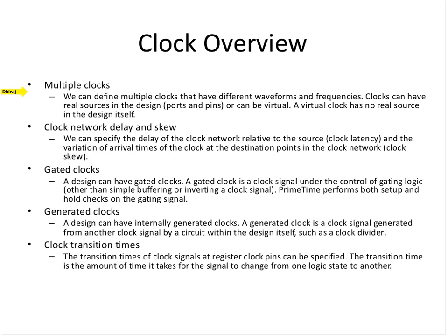For example, if you take a chip for a mobile phone it will have maybe 50-odd clocks for the many applications on that chip. So definitely we can define multiple clocks that have different waveform frequencies. There are two types of clocks: the virtual clock and the real clock. A virtual clock does not have a port associated with it. A clock has two characteristics: network delay/latency and skew. A clock can be either gated or generated. A gated clock — we saw an example of clock gating where a compiler will add clock gates. A generated clock is controlled by some enable signal; it is very essential to make sure both setup and hold constraints are verified on this gated clock.